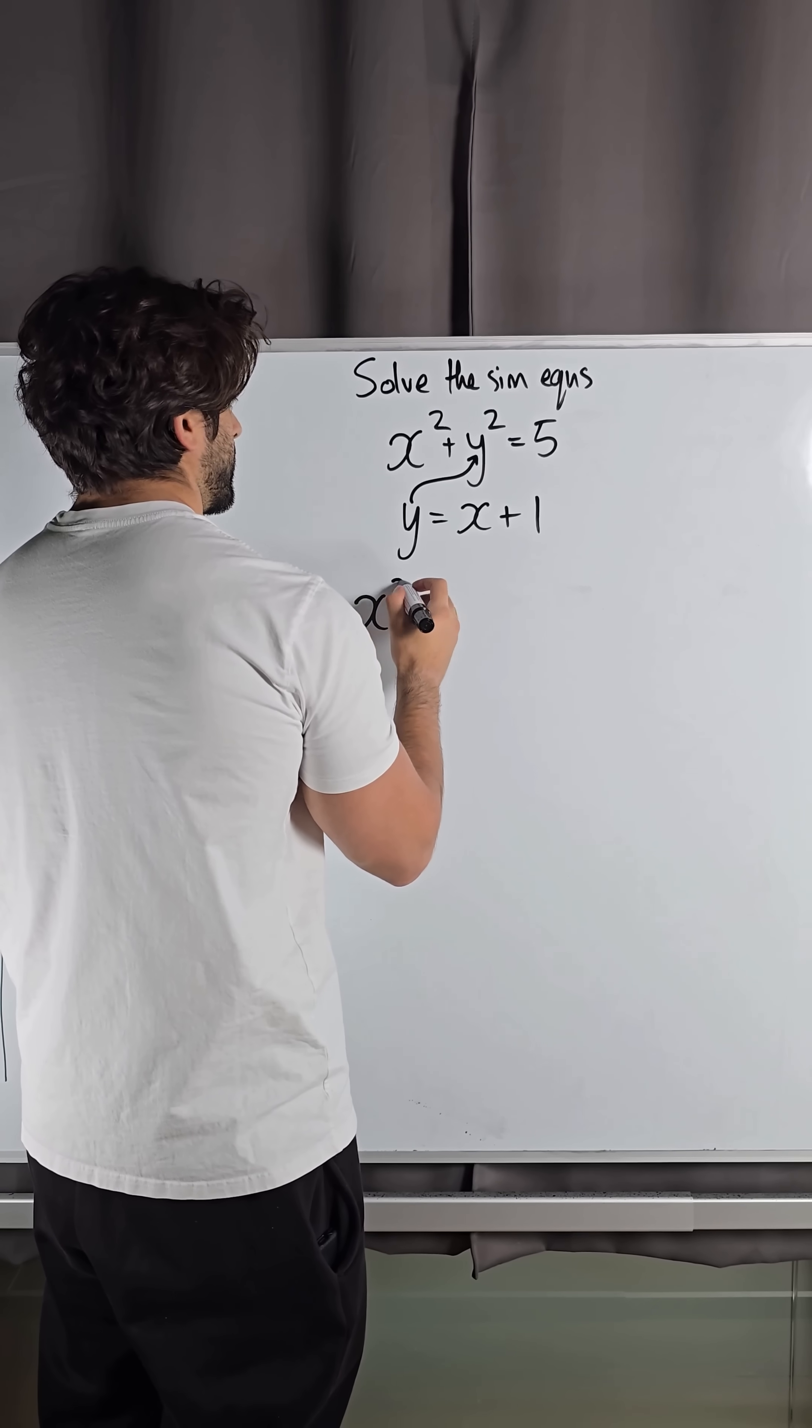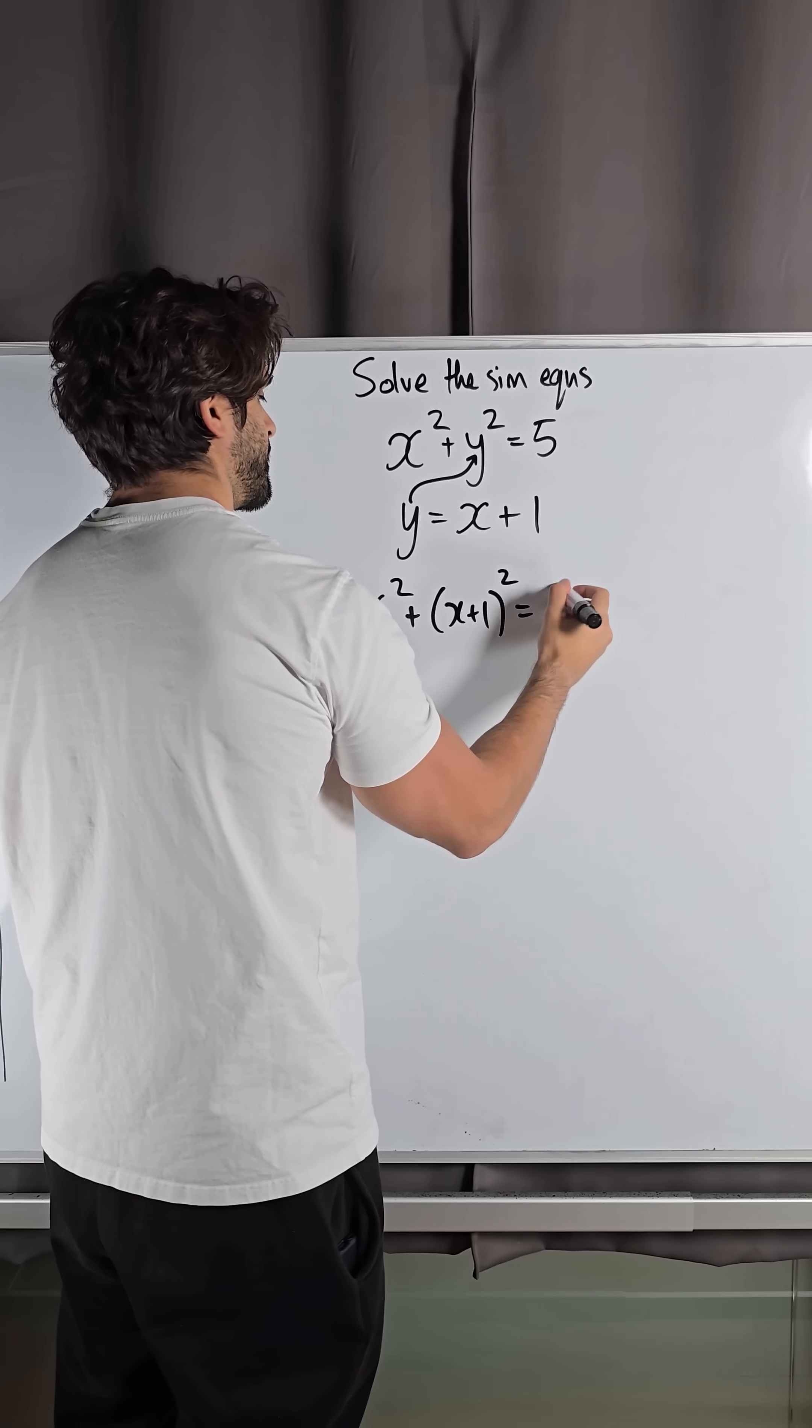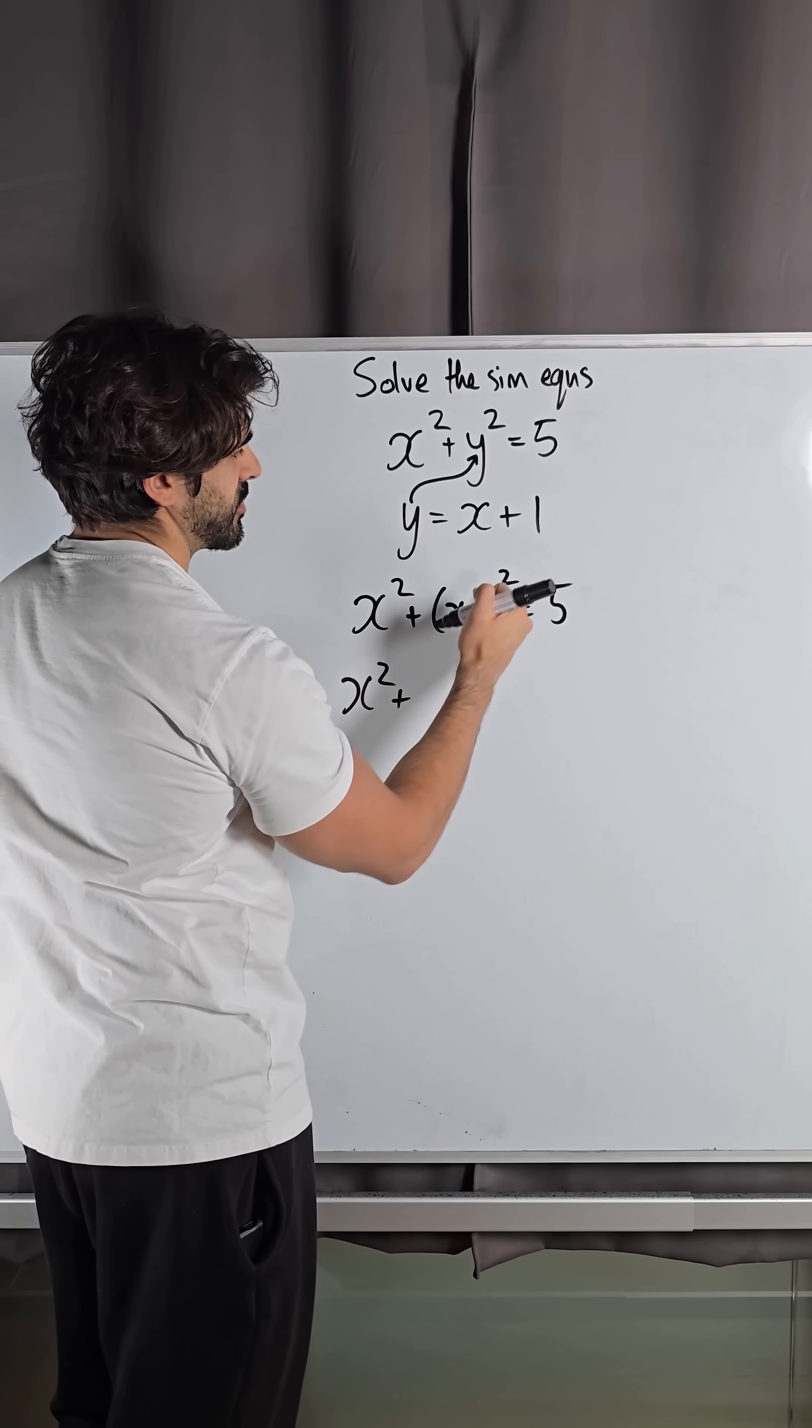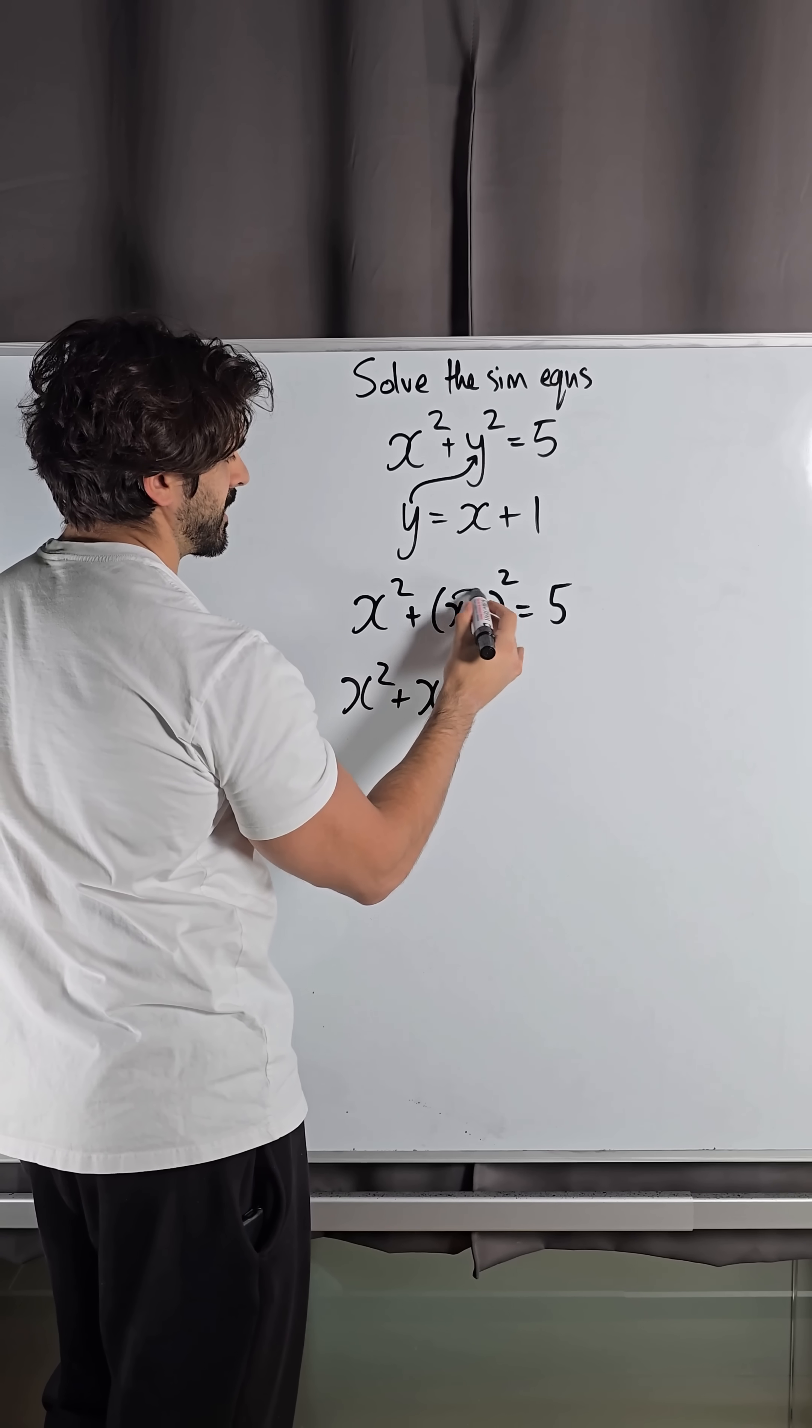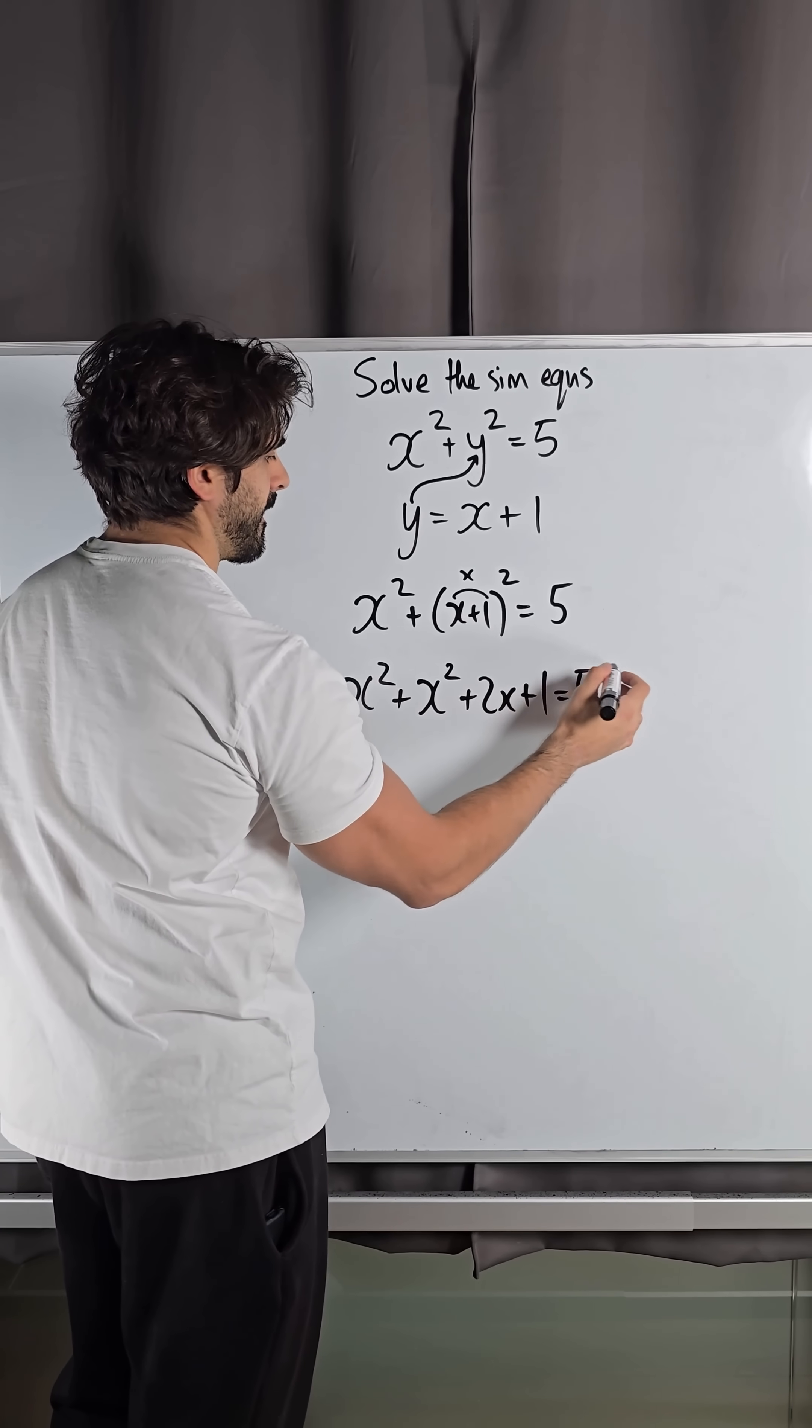So we get x squared plus y squared. Now y is x plus 1, so that's x squared plus x plus 1 squared equals 5. When you expand, you could write it out twice if you want, but I've done this so many times. To expand squared brackets, you square the first term, then multiply these together—x times 1 is x, you double it—then square the last term, which is 1, equals 5.